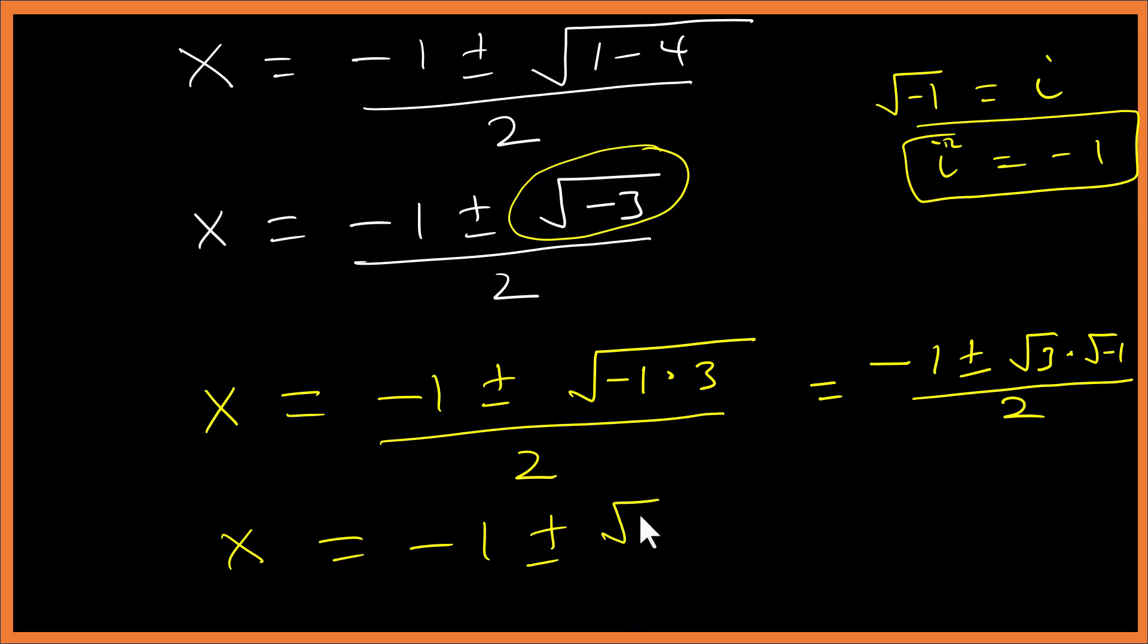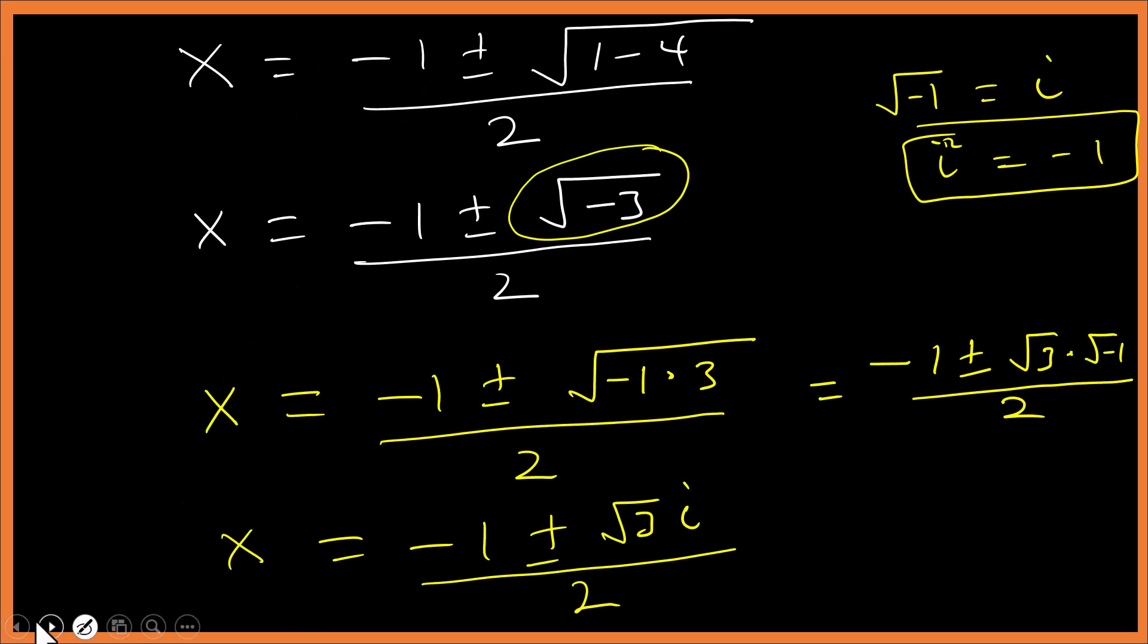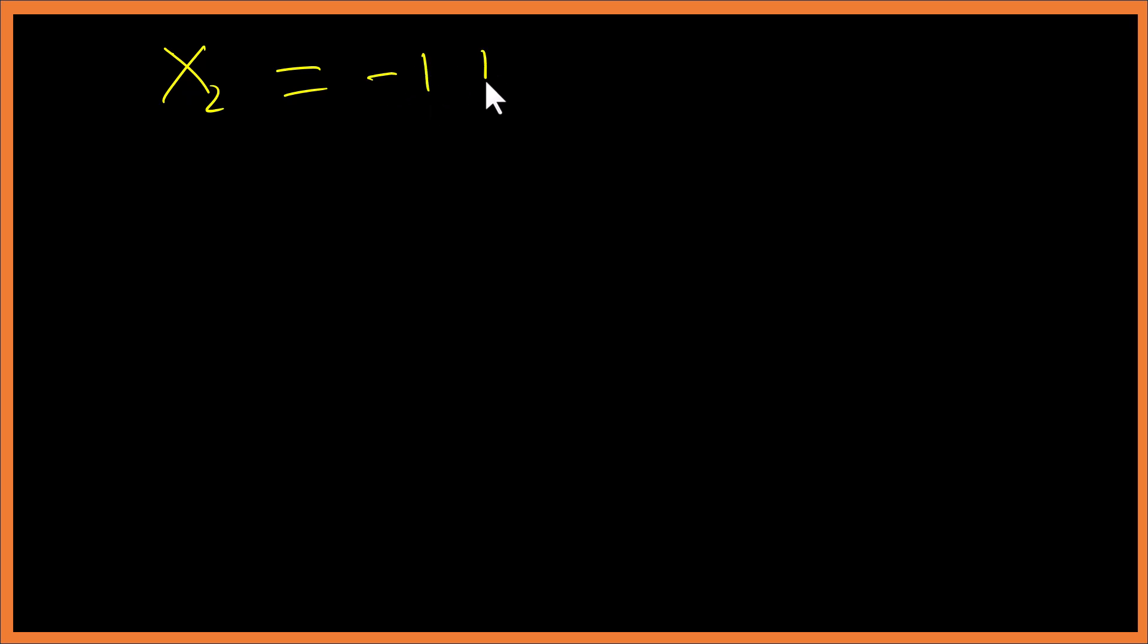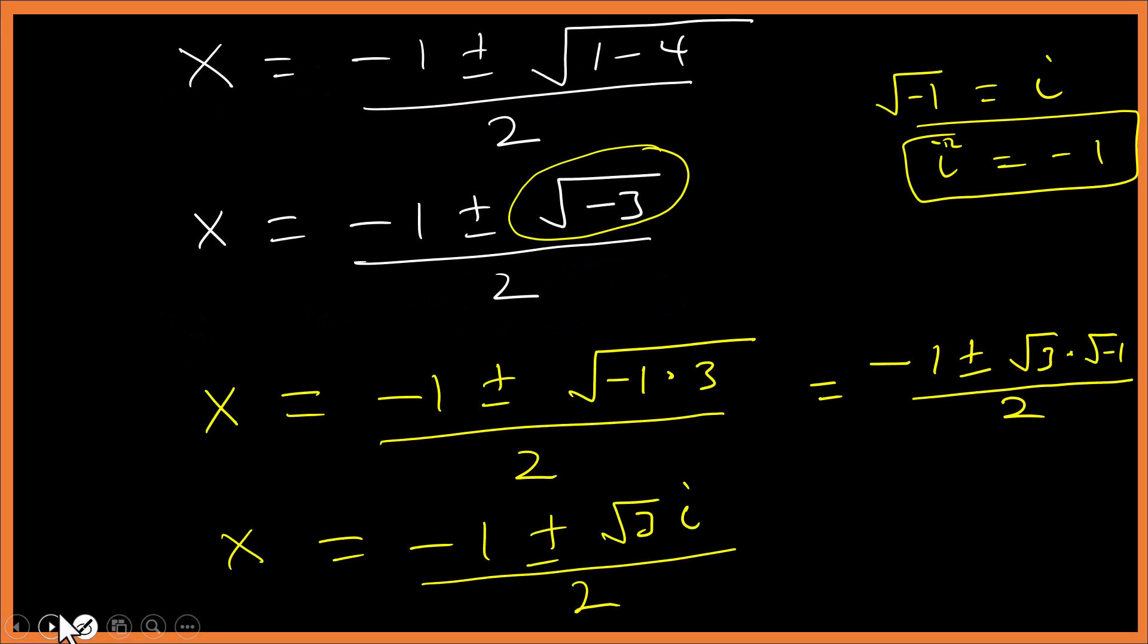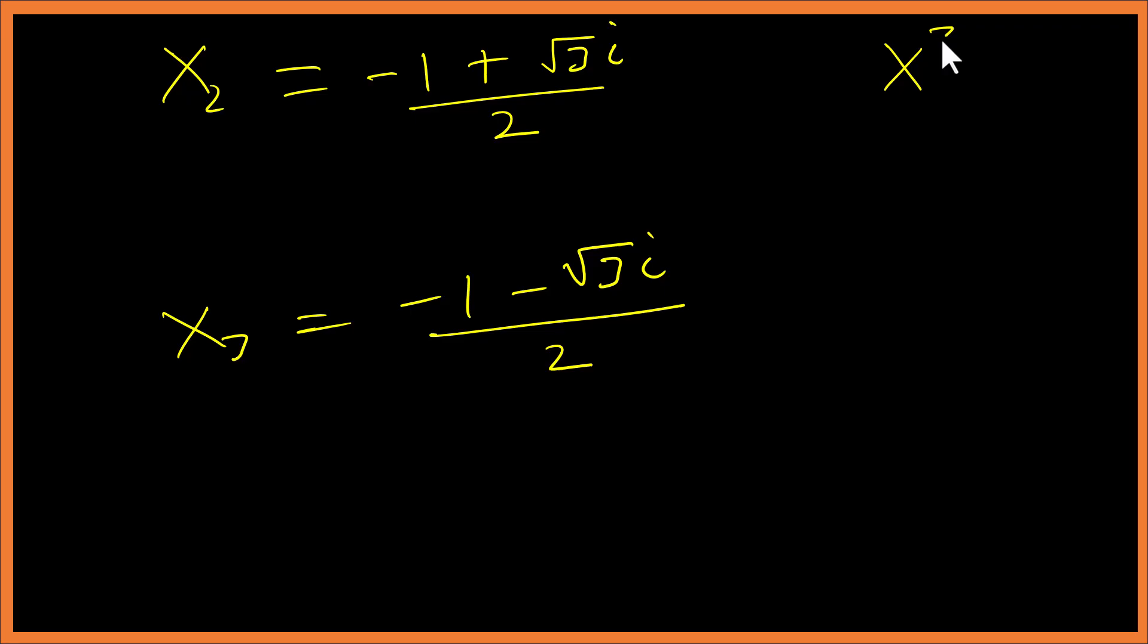So the second solution will be (-1 + √3i) / 2. The third solution will be (-1 - √3i) / 2. All right, so x³ equals 1 has given us 3 solutions. So we have x₁ is 1, and we have 1, 2, 3, that is solutions to this.